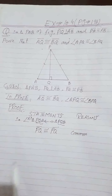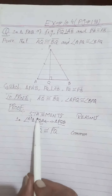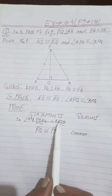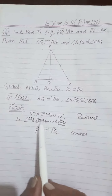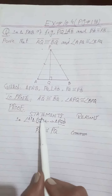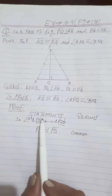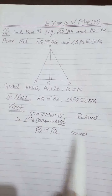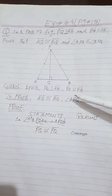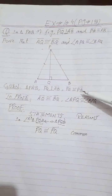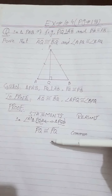The third pair is PA and PB. We check the three headings — given, common, and construction. PA and PB are given as congruent, so this pair is accepted. We have now accepted two sides: PQ (common) and PA = PB (given). The pair QA and QB was rejected because it is what we need to prove.